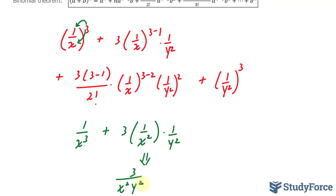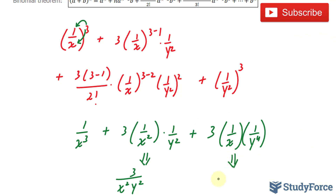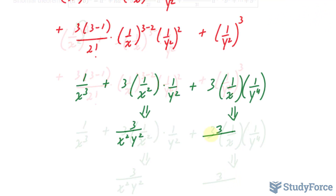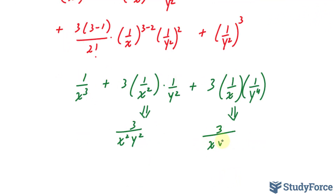Our next term simplifies to: we have three times two, which is six, divided by two is three. Three minus one is one, so that's one over x, and this becomes one over y to the power of four. You can rewrite this, if you combine it, to three over x, y to the power of four. And finally, our last term — plus one over y to the power of two to the power of three — that ends up being one over y to the power of six.